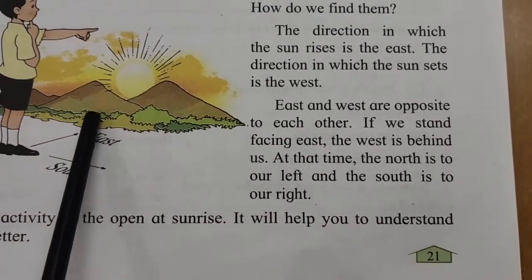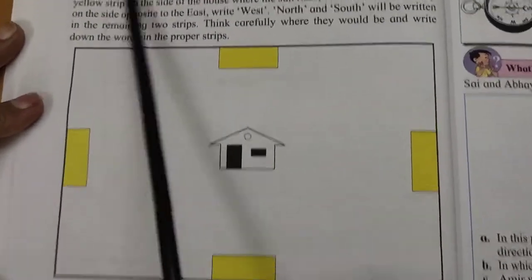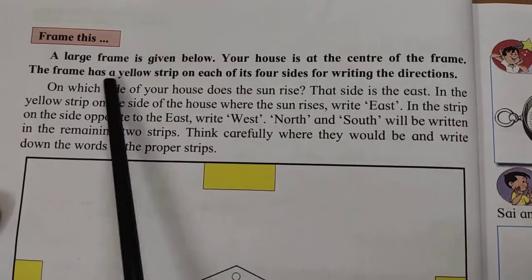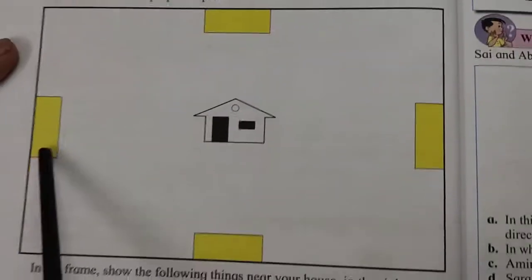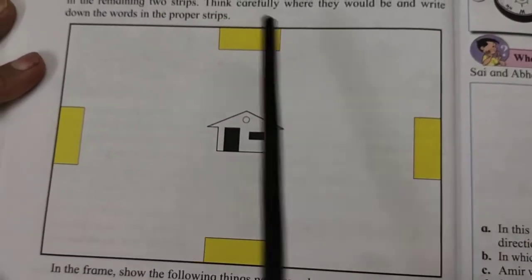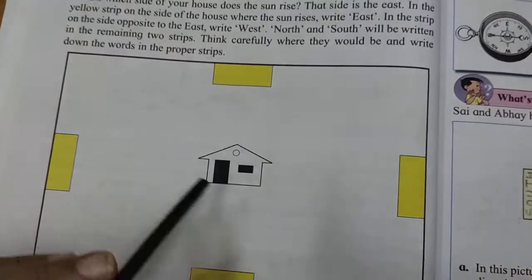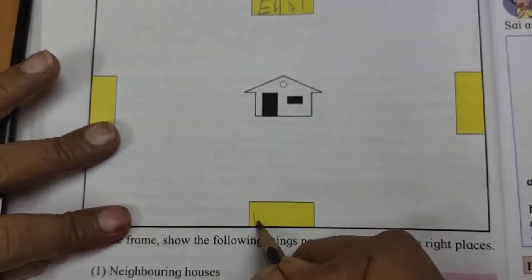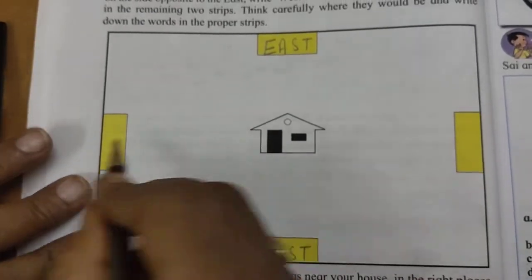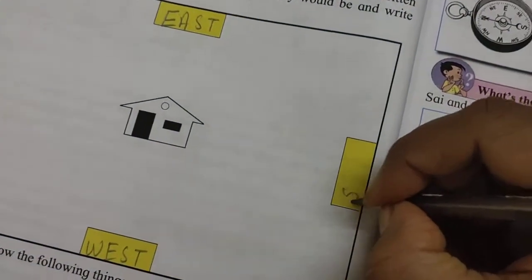You can do this activity at home also to understand the directions. Now, frame this picture — a large frame is given below. Your house is at the center of the frame. The frame has a yellow strip on each of its four sides for writing the directions. I write here East; opposite to East is West. To the left-hand side is North, and the right-hand side is South.